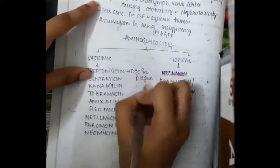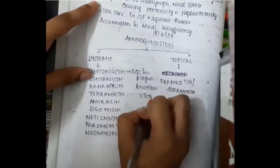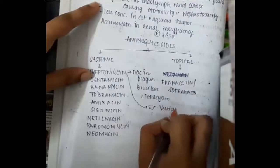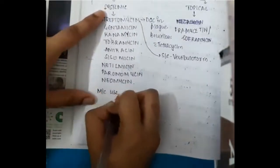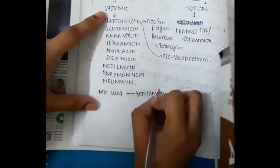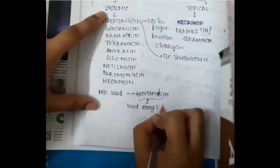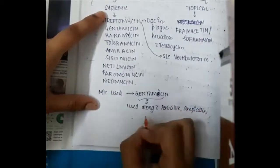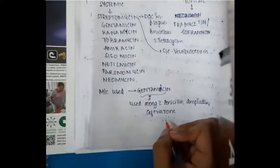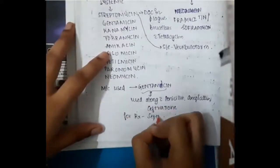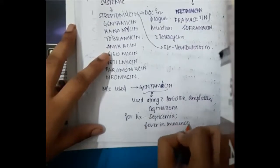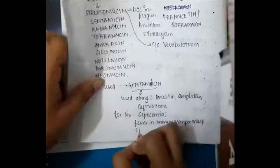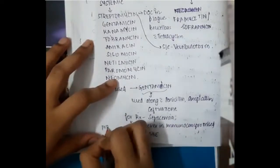Aminoglycosides are effective for gram-negative aerobic bacilli. Streptomycin is the drug of choice in plague and brucellosis (with tetracycline) and causes vestibulotoxicity as a side effect. The most commonly used aminoglycoside is gentamicin, used with penicillin, ampicillin, and ceftriaxone. They are used in septicemia, fever in immunocompromised patients, and subacute bacterial endocarditis.